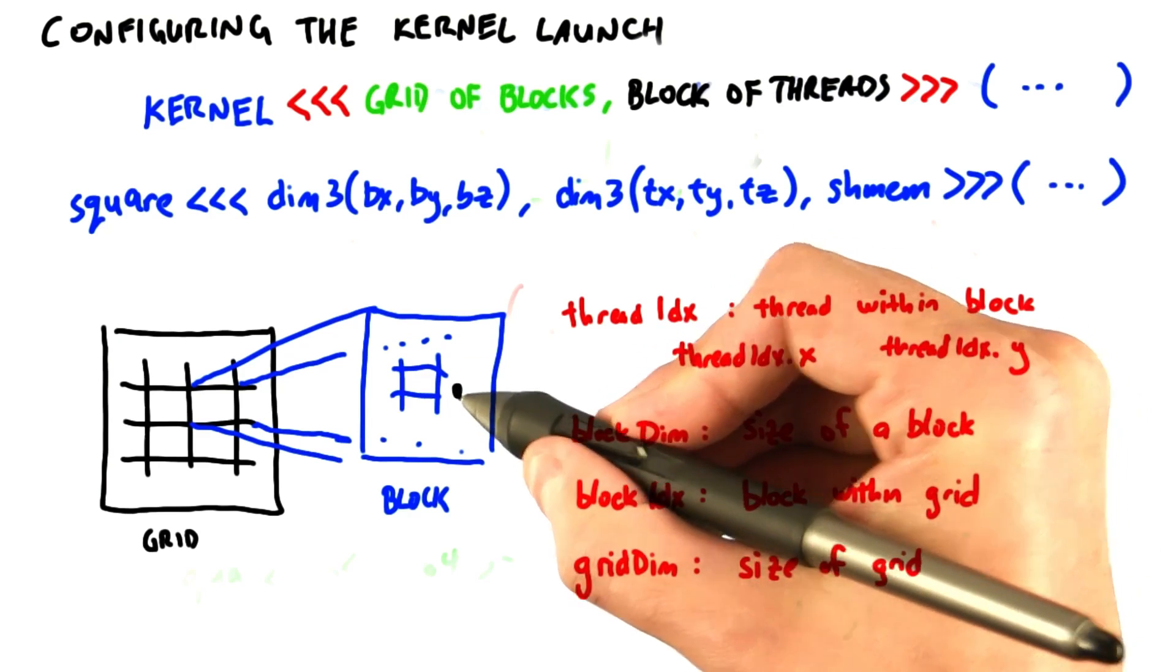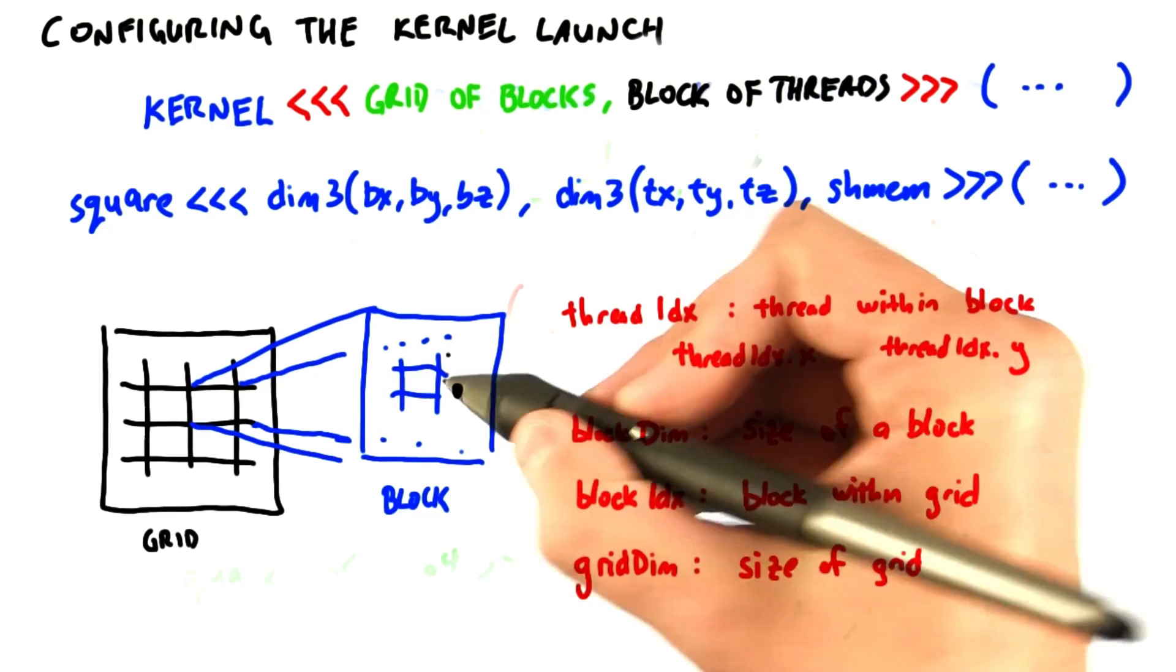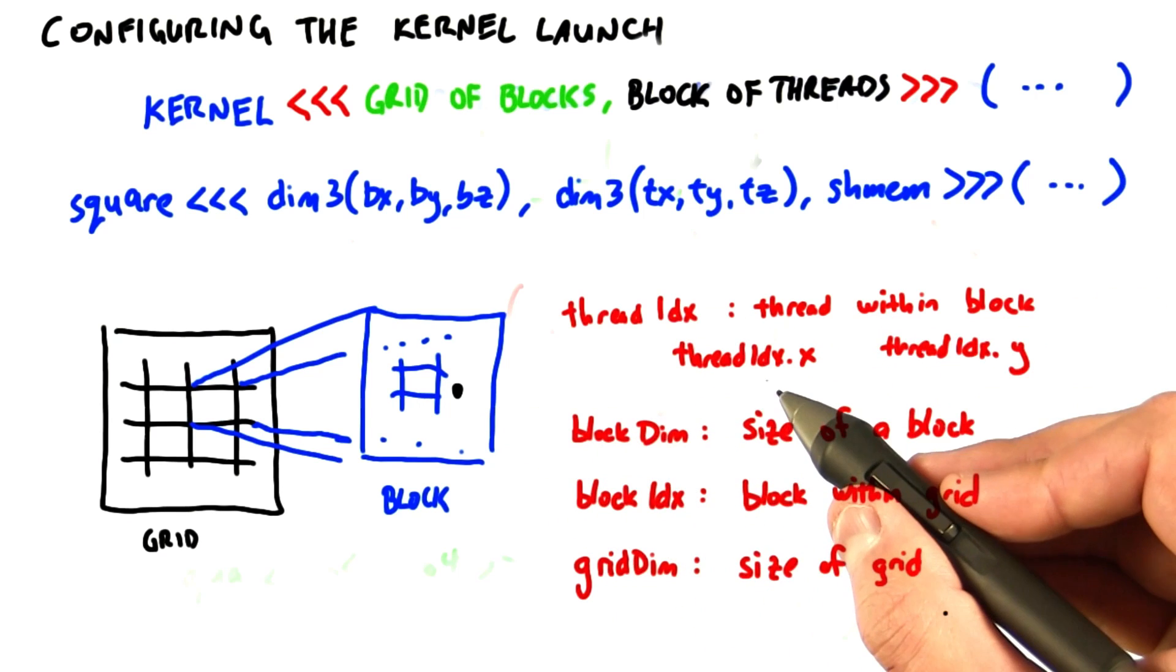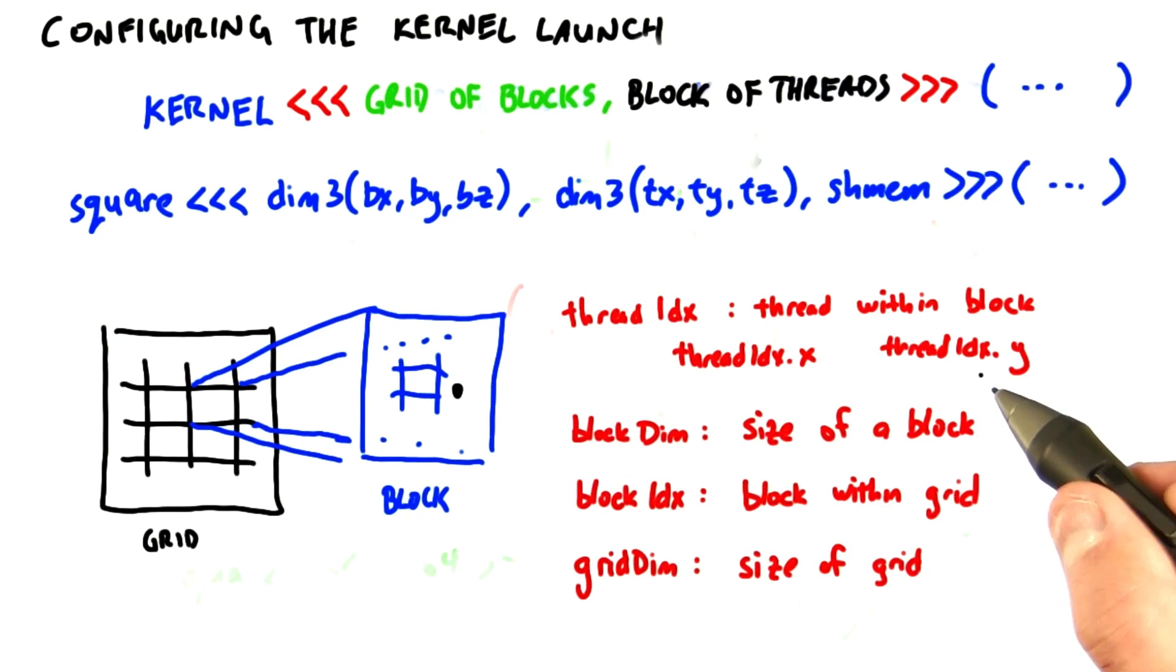So here we have a block. Each thread, say this thread here, knows its index in each of the x, y, and z dimensions. We can access those as threadIdx.x, threadIdx.y, and .z.